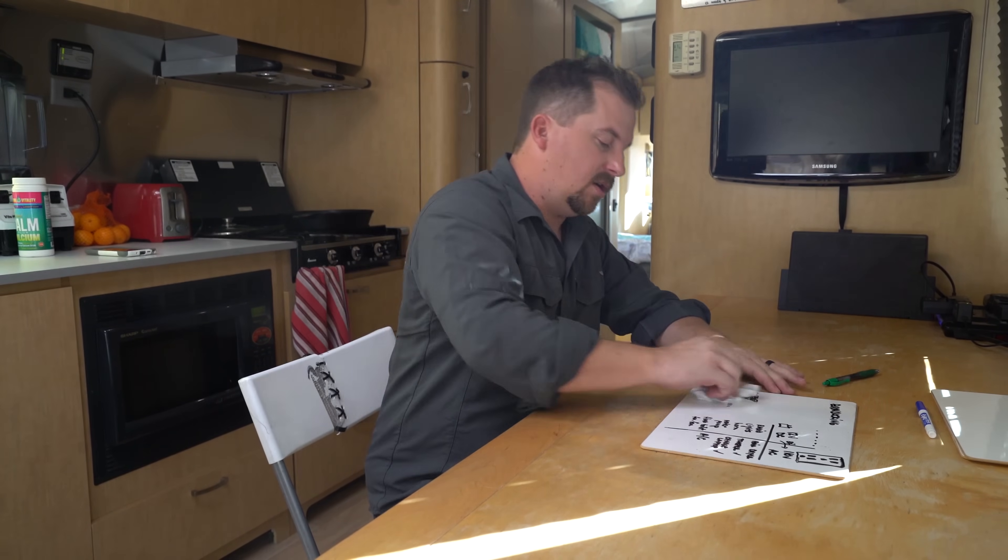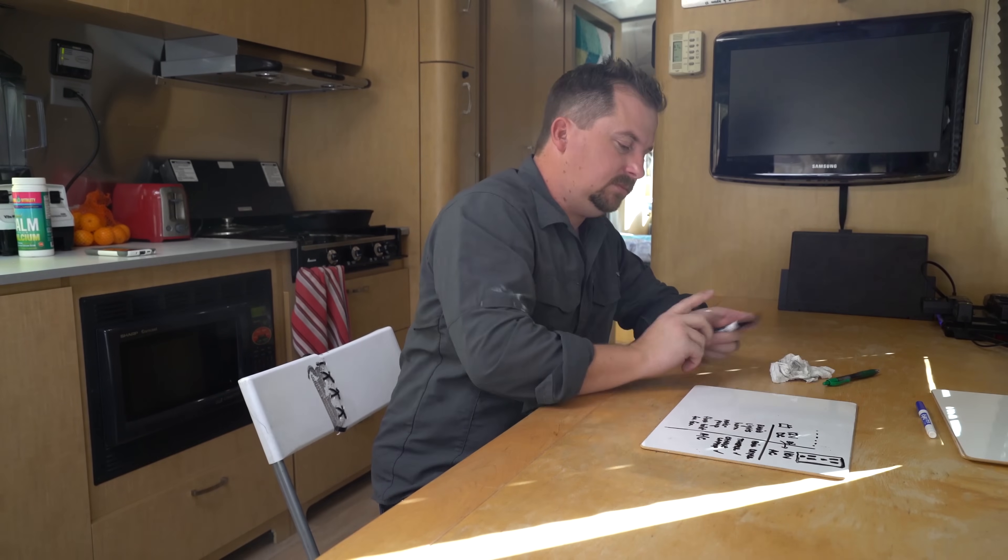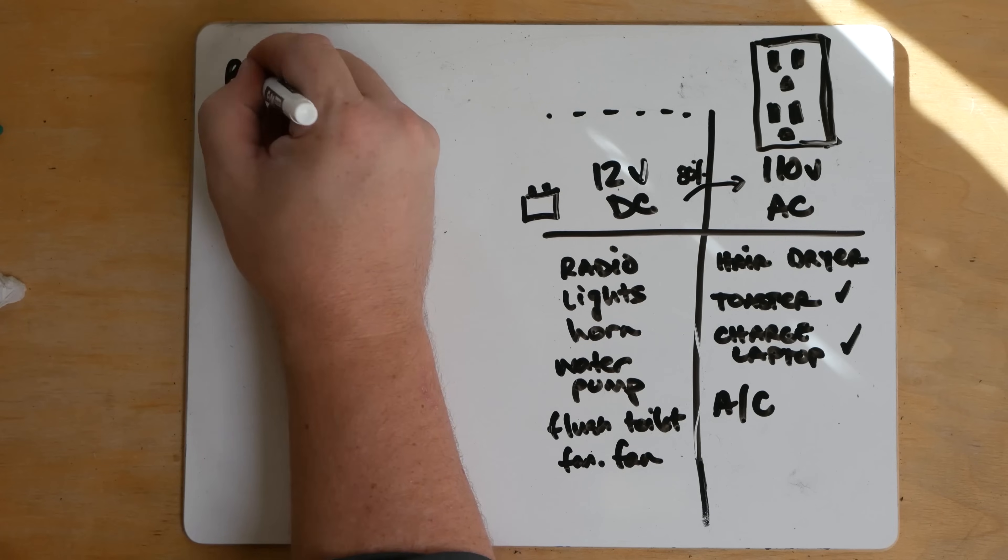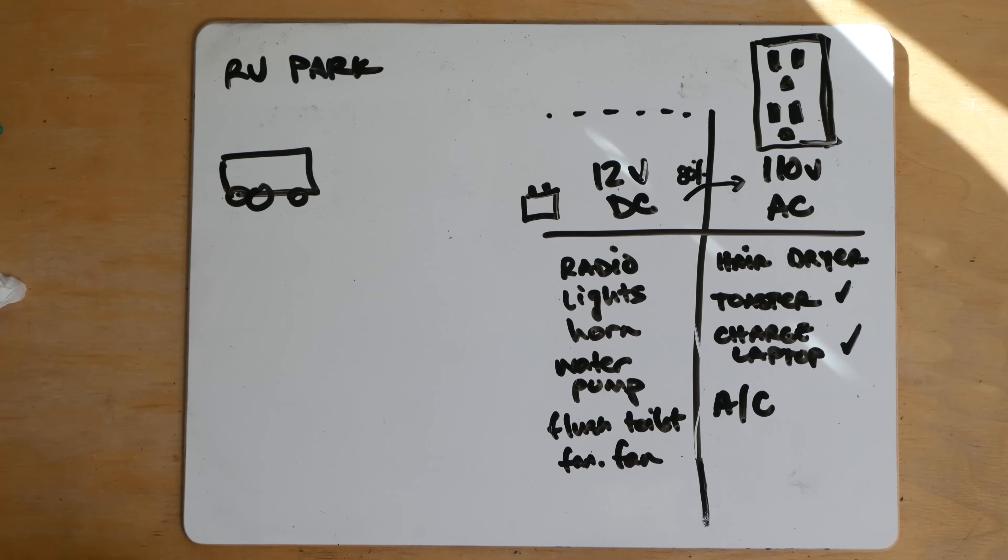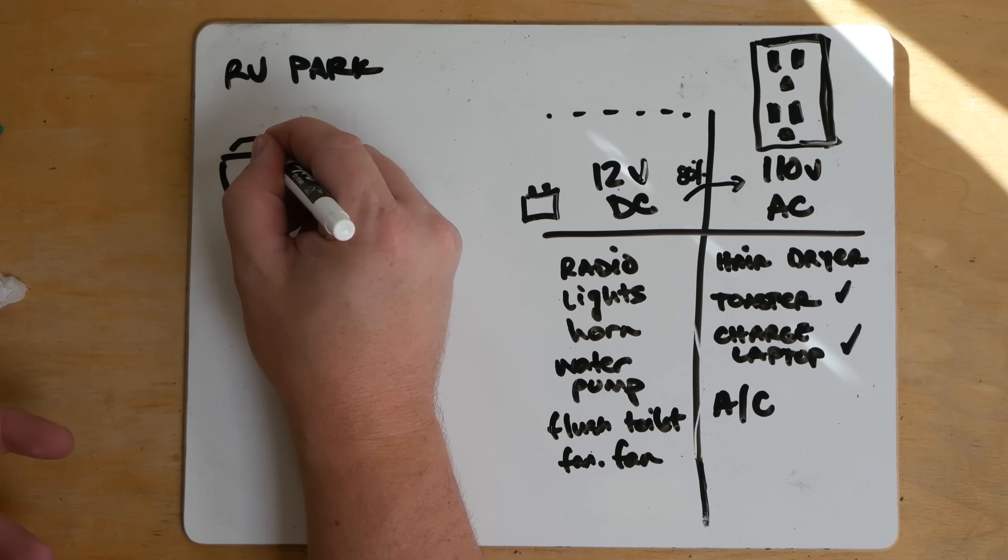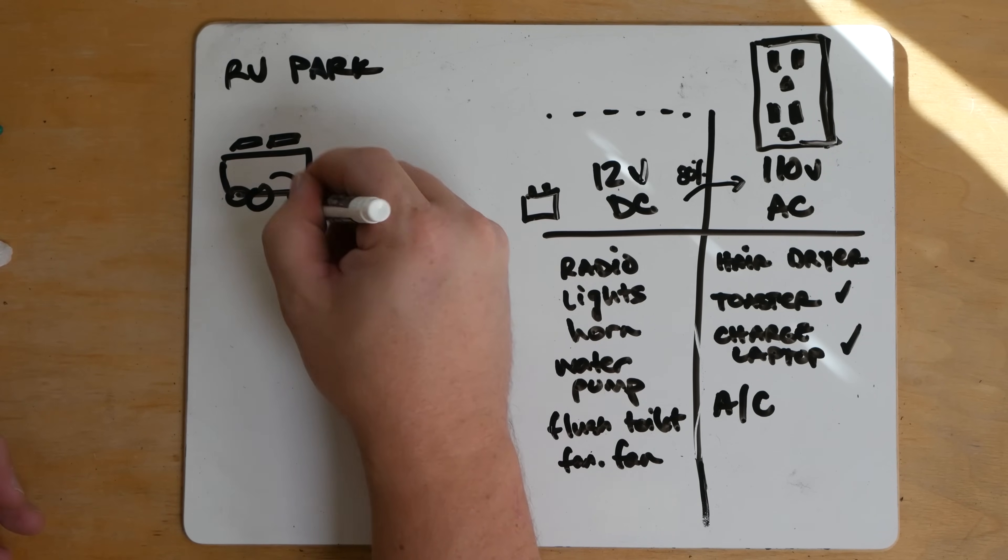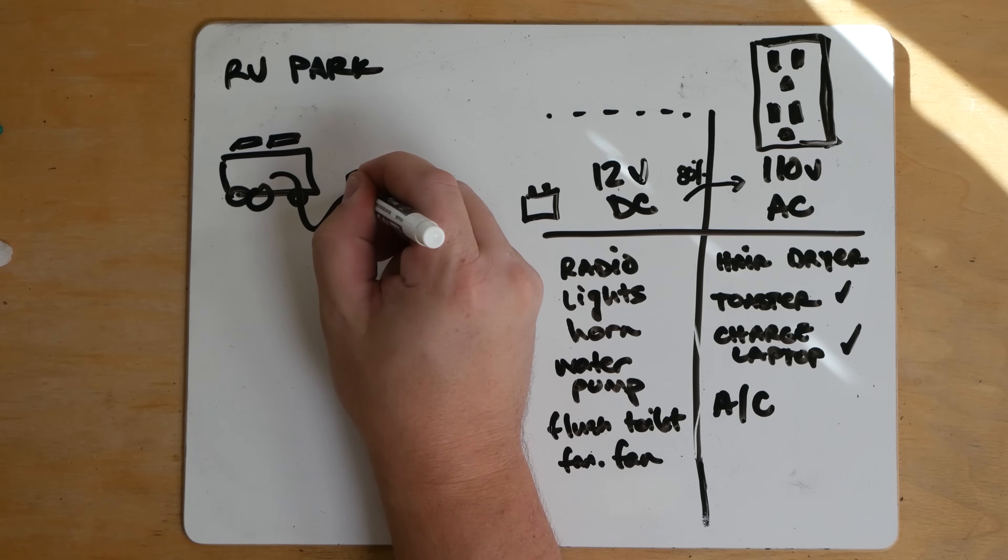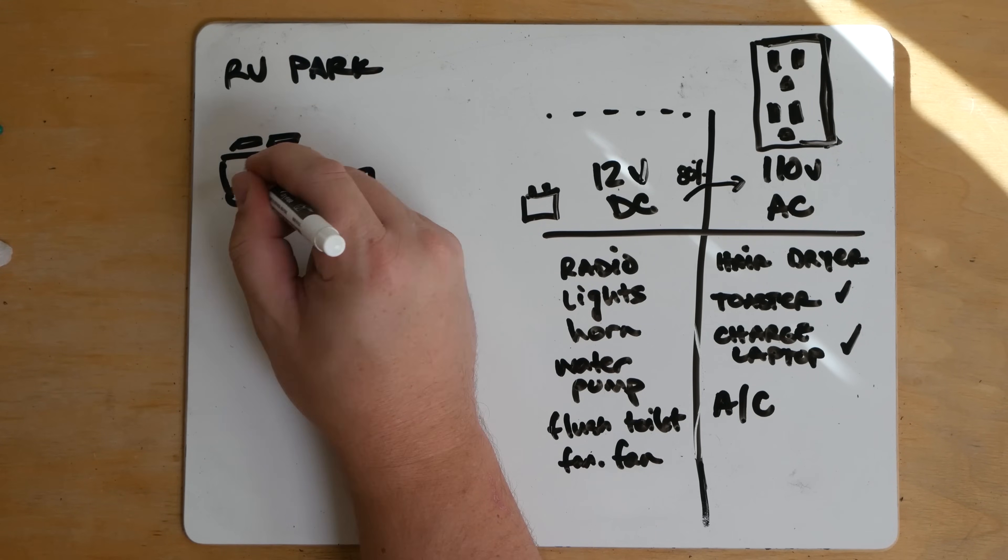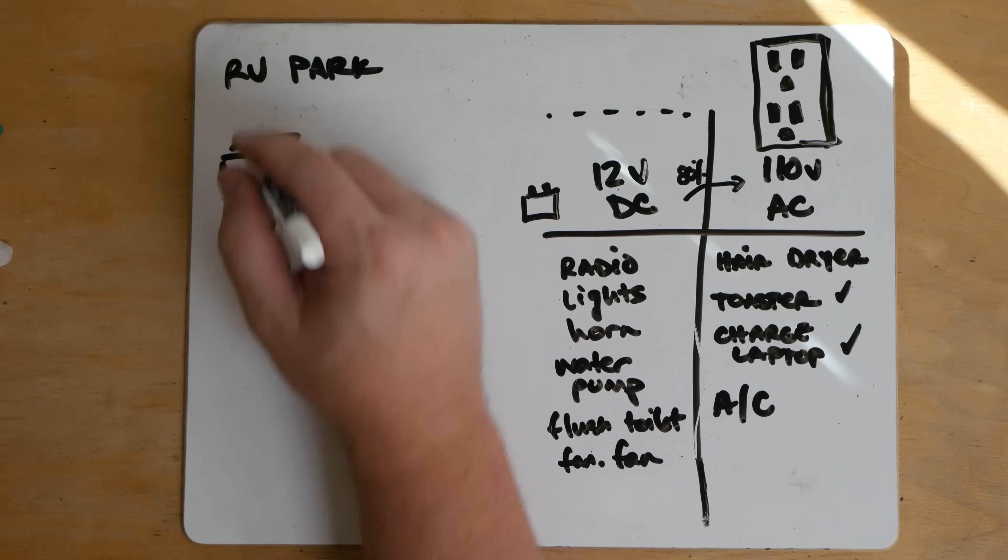So in an RV park, solar does nothing for you. All solar does is let you not plug in. So solar's not super helpful if you're always in the RV park because you're plugged into the pedestal. There are exceptions to this, but for the most part, you're plugged into the pedestal and the pedestal is charging your battery. So solar's not doing you much there.